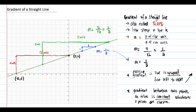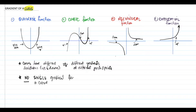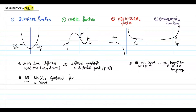Unlike gradients of straight lines that we have studied before, the gradient is the same anywhere in the line. In curves, there is no single gradient. It is different at every point. The gradient, M, of a curve at a point is equal to the gradient of the line tangent to the curve.